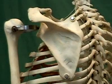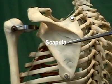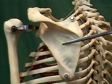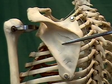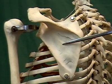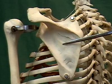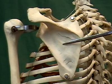The scapula is a large, flat, triangular bone that is suspended on the posterior wall of the ribcage by its muscular attachments.